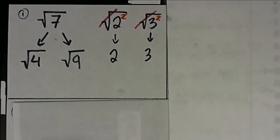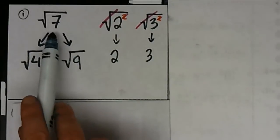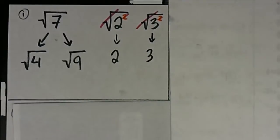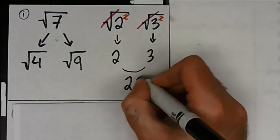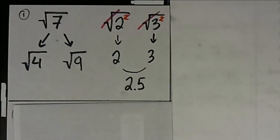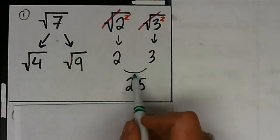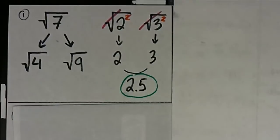Now, when we estimate, we're going to do a rough estimate here. So 7 is in between 4 and 9, so the answer to the square root of 7 is going to be between 2 and 3. 2.5 is somewhere in the middle there, and that's good enough for us. The actual answer is probably going to be a little bit closer to 9 — so maybe 2.6 — but this is good enough for us. Questions on number 1?